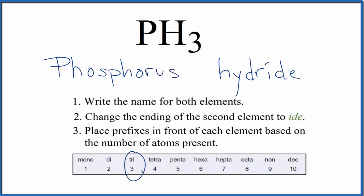So we're going to call this phosphorus trihydride. The name for PH₃ is phosphorus trihydride, and we're using the prefixes because we have a molecular compound with two nonmetals.